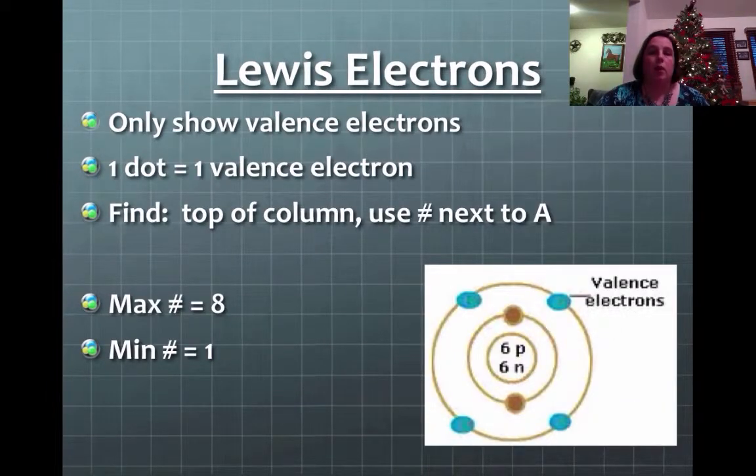So, Lewis electrons. They only show the valence electrons. Remember, those are the ones that I showed you on the outermost shell. Each dot you see in a Lewis dot diagram represents one valence electron. Remember, the trick is to use the column, use the number next to the A.